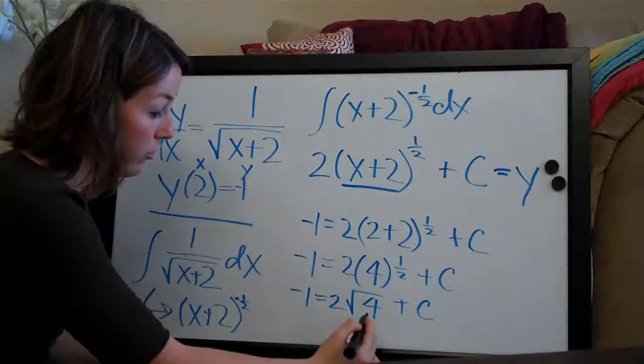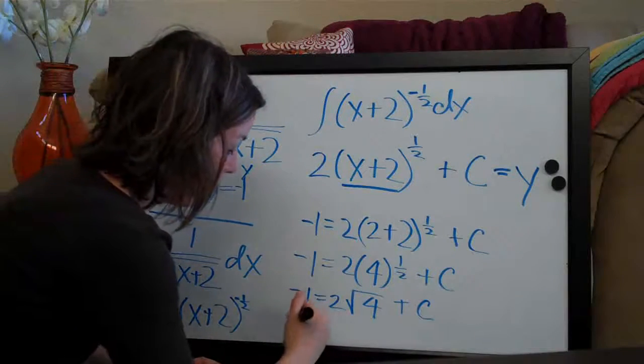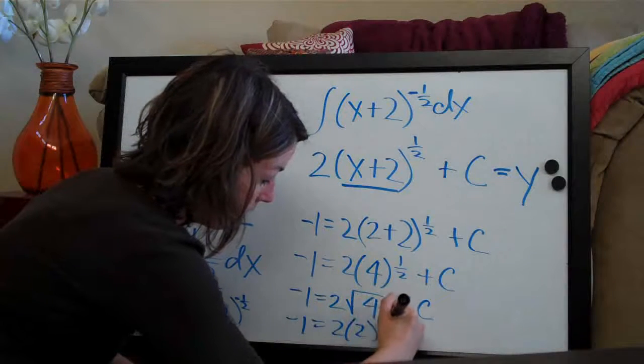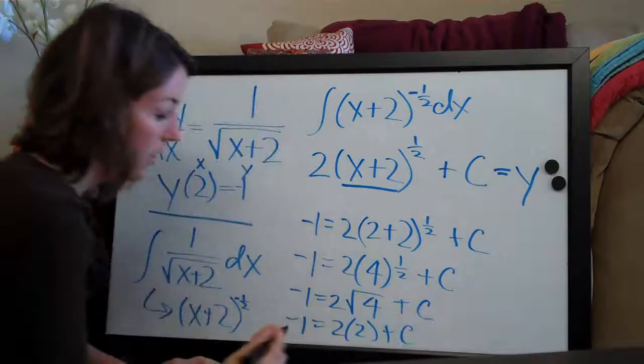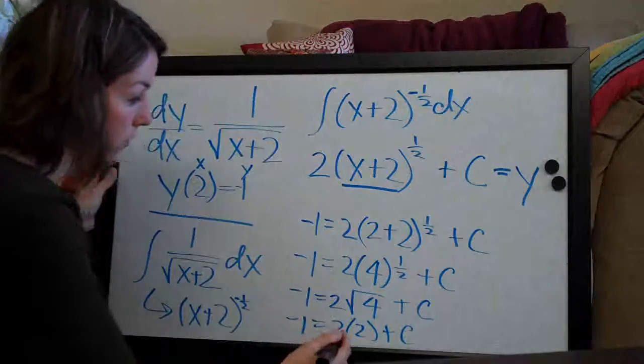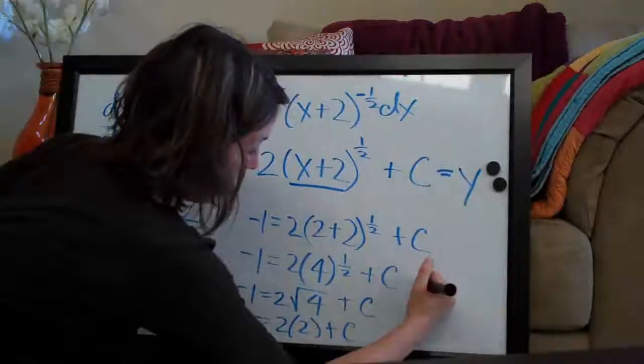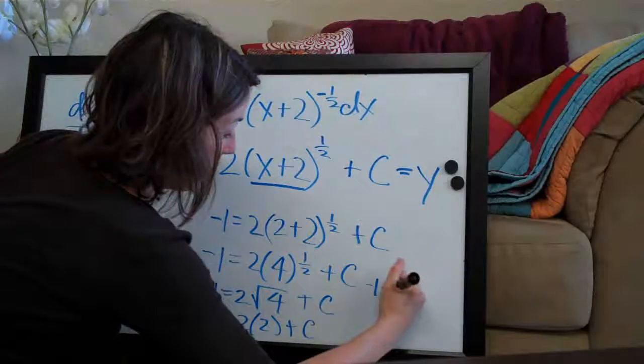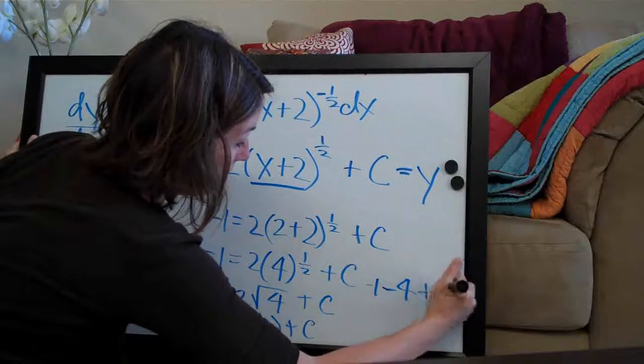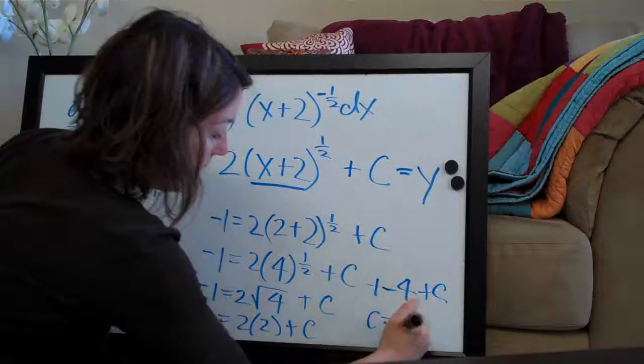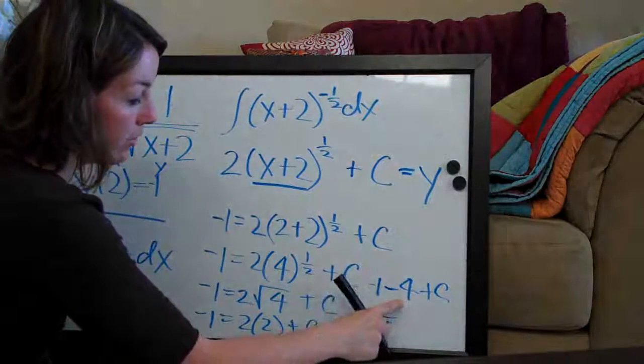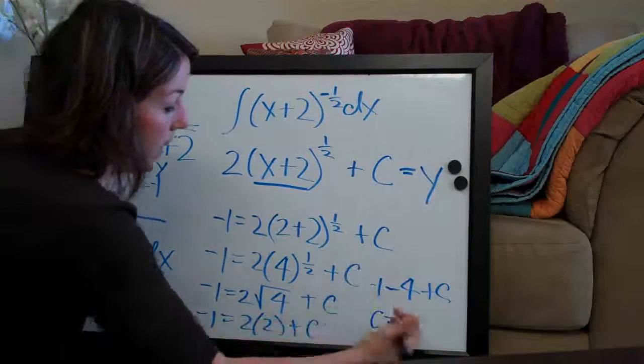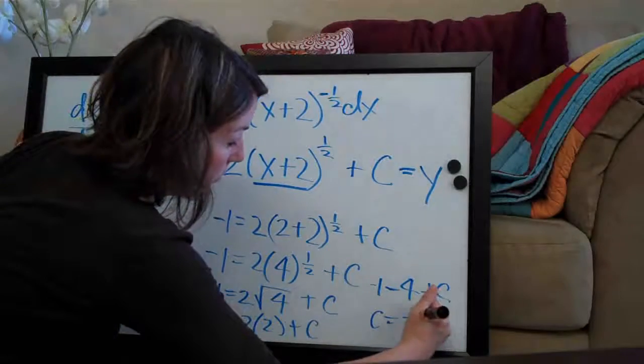The square root of 4 is 2. So we have negative 1 equals 2 times 2 plus c. So let's go ahead and write this over here. We have negative 1 equals 4 plus c. So c equals negative 1 minus 4. We subtract 4 from both sides. It cancels over here and we have c equals negative 5.